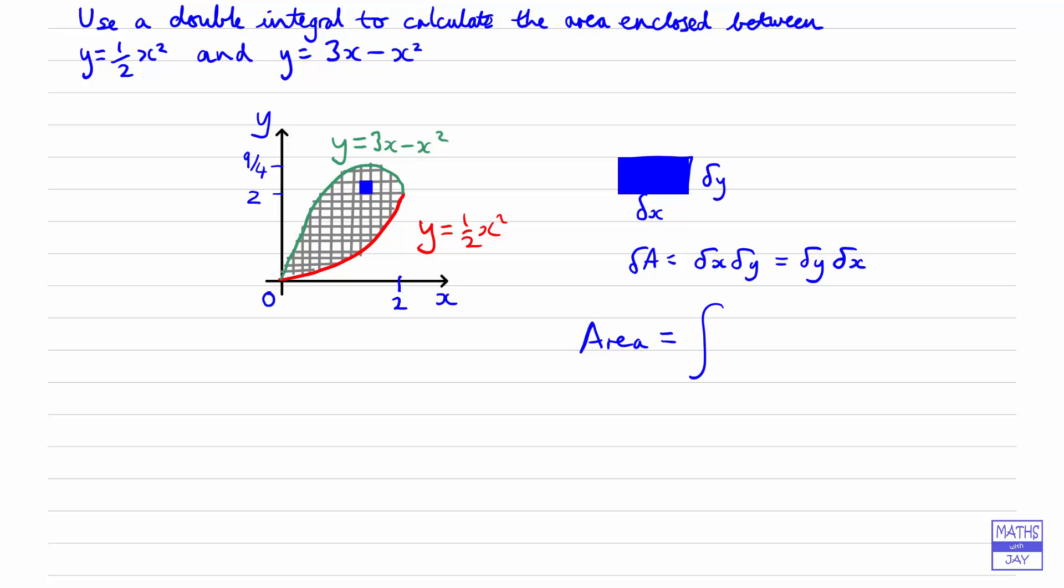In the limit as delta x and delta y become vanishingly small, we will get the area of the region that we want. That is simply going to be a double integral. We could put 1 in here, and that will be either dx dy or we could work the integrals out the other way around and get dy dx.